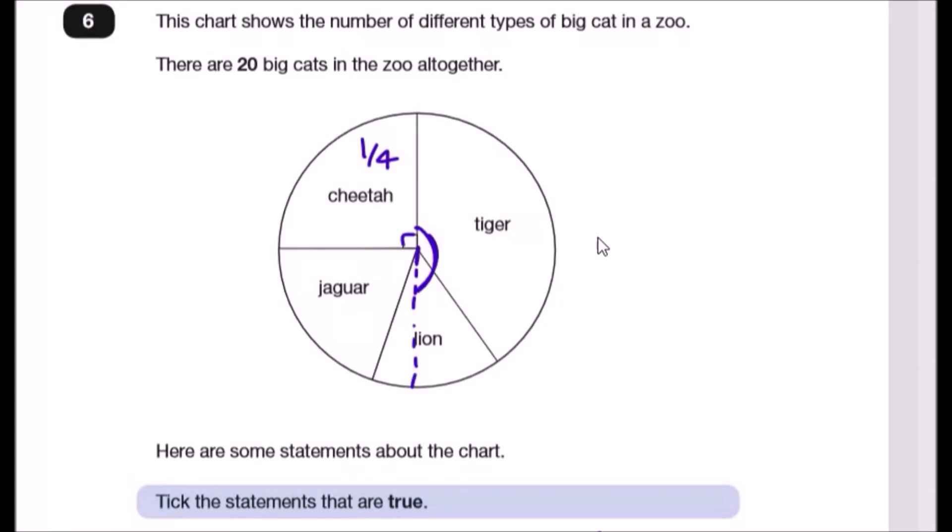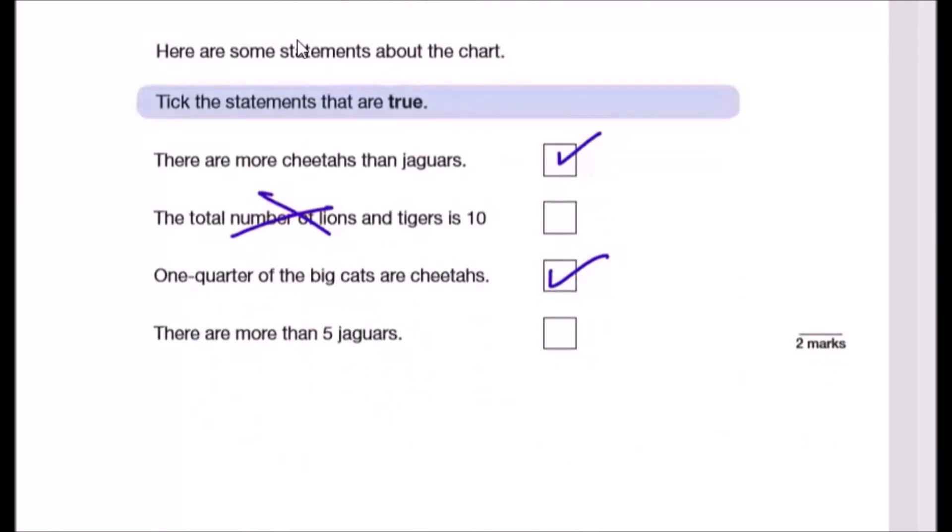There are more than five jaguars. No, the reason why is because five represents one quarter of 20. So if you're at one quarter of 20, you should get five, that's how many cheetahs there are. So jaguars looks like a bit less, my money's on four probably. And tiger, we're not too sure. So we can say no. That's it guys, that's literally all you do.